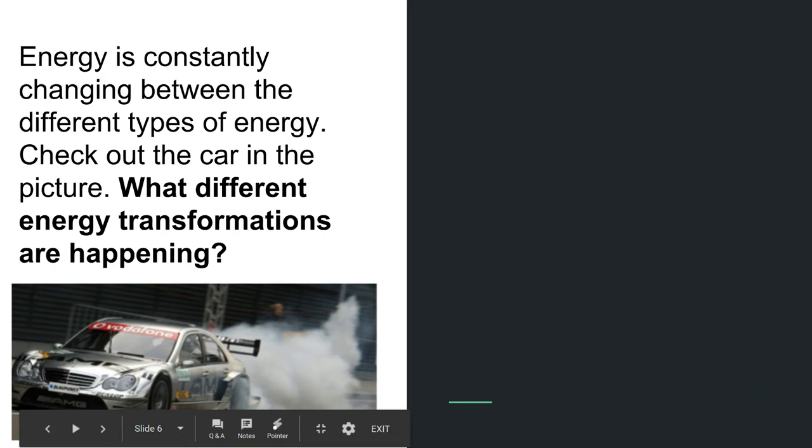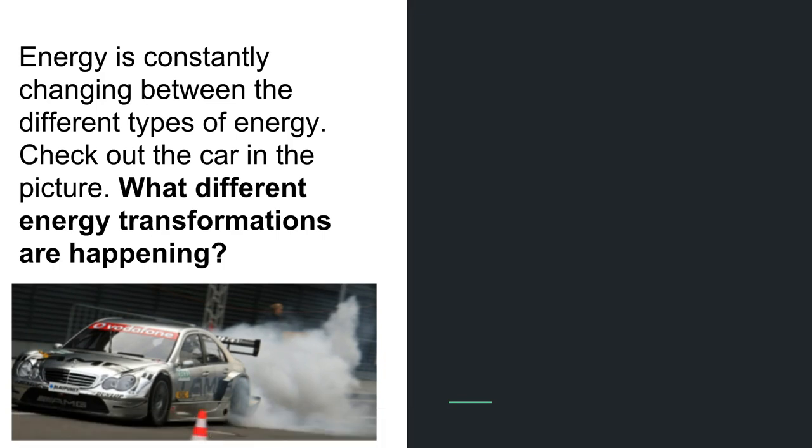So anyway, energy is constantly changing between the two different types as you saw really good examples in the video. Let's look at this car in the picture. What are some of the different energy transformations that are happening?